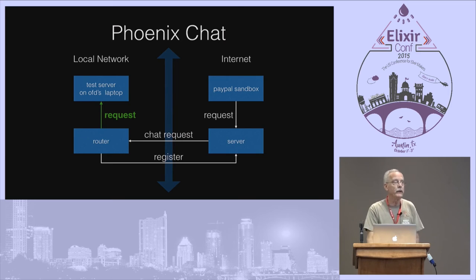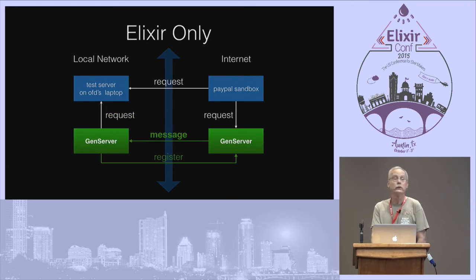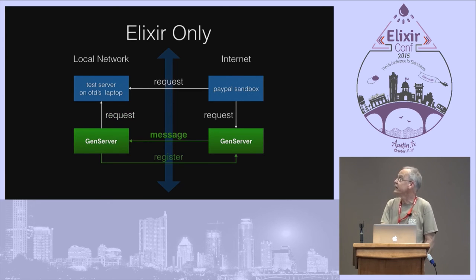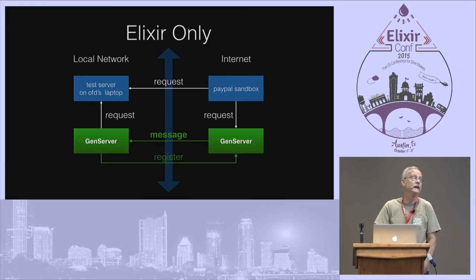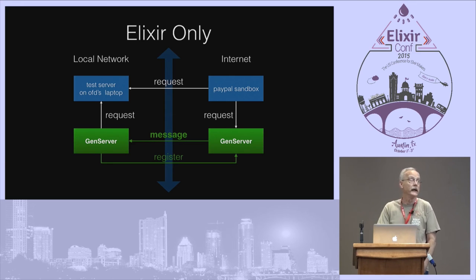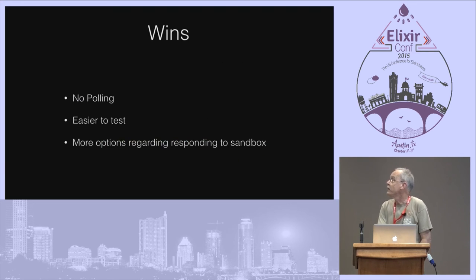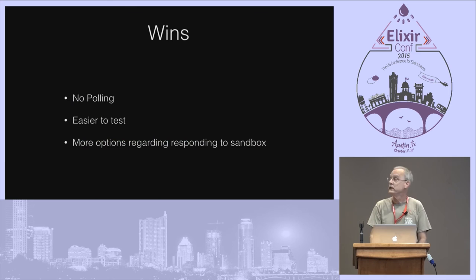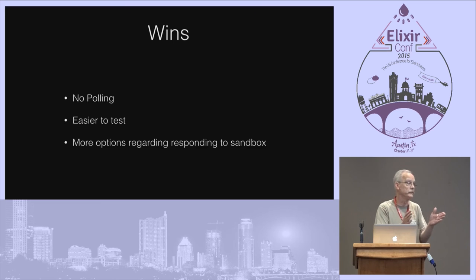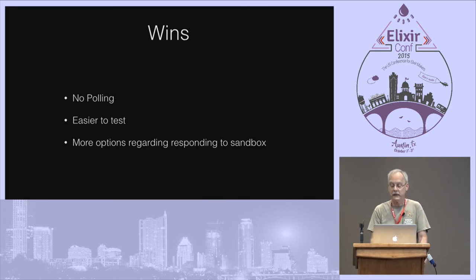If you want to dig into Elixir a bit more, you can also do this with GenServers — put a GenServer on the local area network side and one on the Internet side, set up the registration, and now you're passing messages instead of using a channel communication. The wins here are no polling, it's certainly easier to test, and it gives you more options for responding to the sandbox without a varying polling interval. Overall the code is no more complicated — in fact, it's probably simpler. It's an overall win.